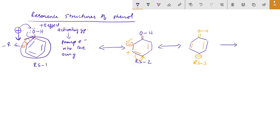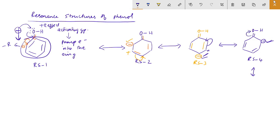Third, then fourth. Resonance structure 3 — again the single bond will get shifted to this carbon, therefore this will be resonance structure 4. The double bond will go back to oxygen, so this carbon will develop a positive charge.